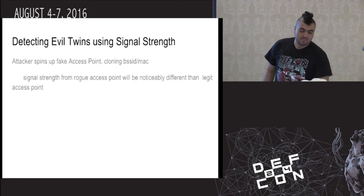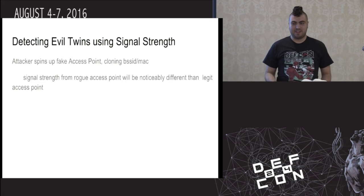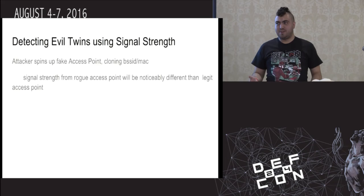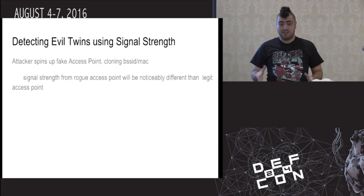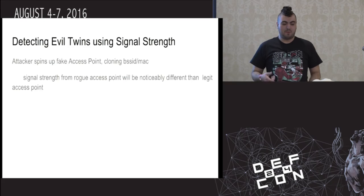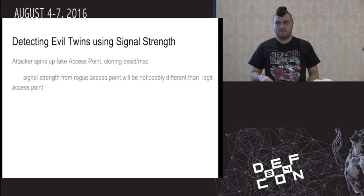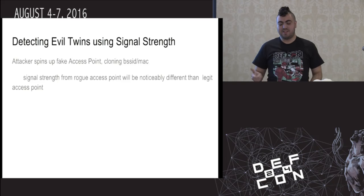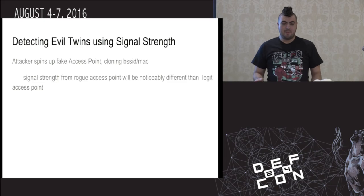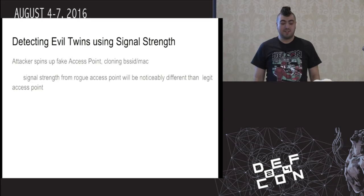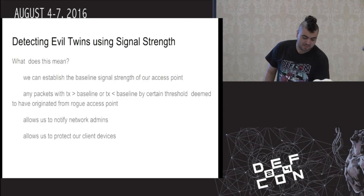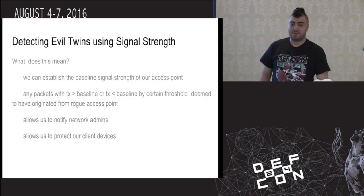What this means is that if we establish a baseline TX value from our packet sniffer to our access point, and then listen for probe responses that claim to come from our access point — that have the BSSID, ESSID, and same channel as one of our legitimate access points — but have a TX value that is really noticeably different from our legitimate access point, then we know that it's probably a rogue AP.